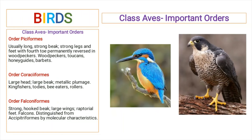Strigiformes includes owls. Order Piciformes includes birds that are usually smaller but possess a long and strong beak, strong legs and feet, and the fourth toe is permanently reversed in woodpeckers. It includes woodpeckers, toucans, honey guides, and barbets.